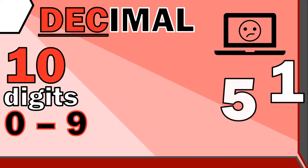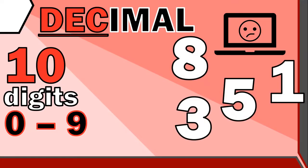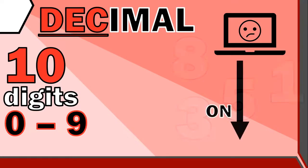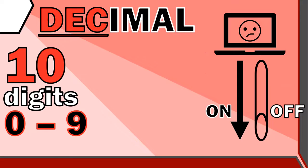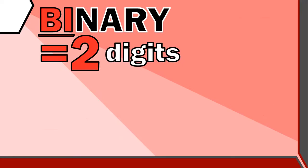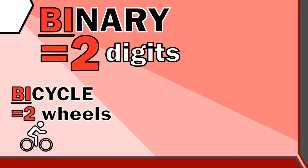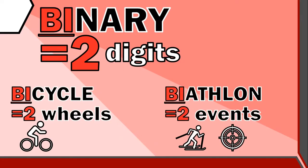A computer can't process 10 different states — it can't tell the difference between a 1, a 5, an 8, or a 3 — because it's electronic. All it can really process is a pulse of electricity or no pulse: what we call an on state or an off state, the presence of current or the absence of current. So there are only two possible options, and that's why computers prefer to use a binary number system. 'Bi' means two, like a bicycle has two wheels or a biathlon has two events.